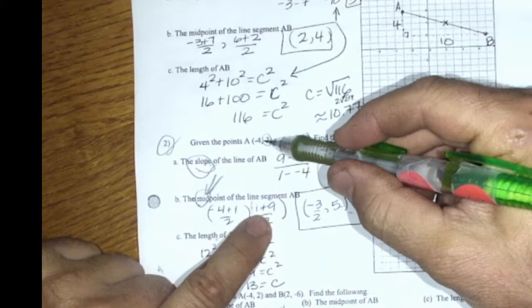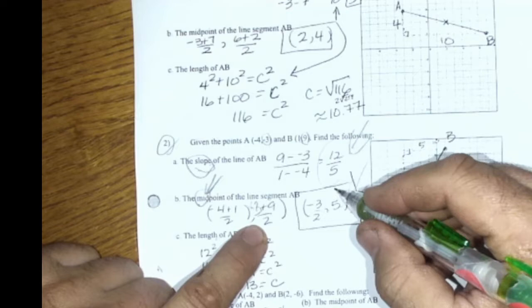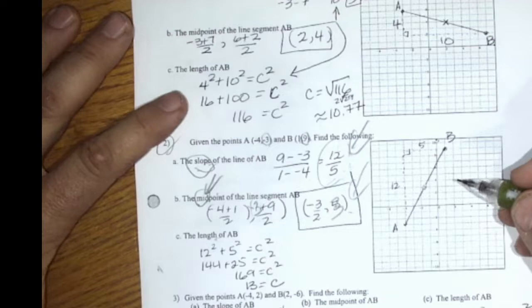So then I take the y's and add those together. So that's 9 minus 3. This should be a minus 3. So that would be 6 divided by 2 is 3. Up 3. Okay? That makes sense.